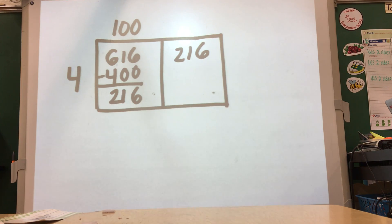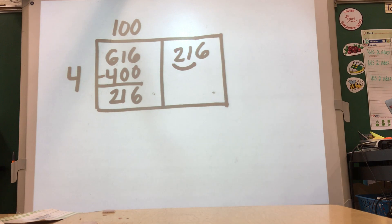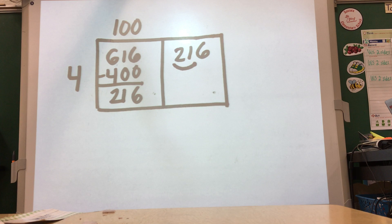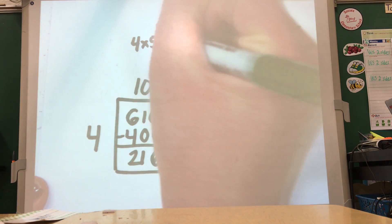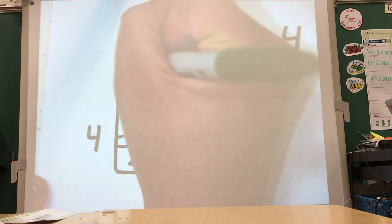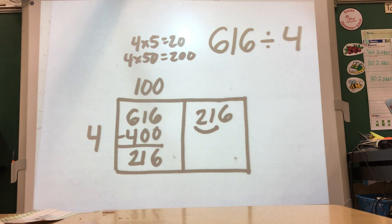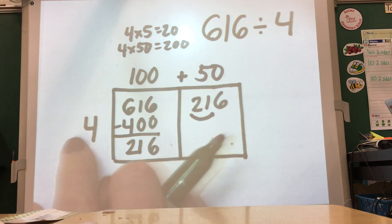One method I've shown them we call the smile method — not an official math term, just something students like to use. If we curve under the first two digits and look at the 21 — it's really 210 of course — they think what fours fact is closest to 21? Well, 8, 12, 16, 20. They know that four times five is 20, so therefore four times 50 is 200. So 200 is a fours fact that's pretty close to 216, and that's the fact we're going to go with.